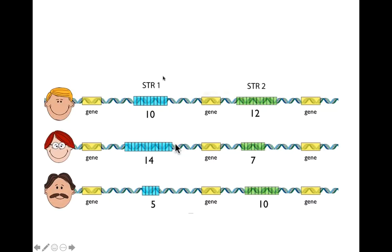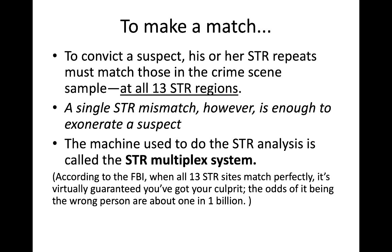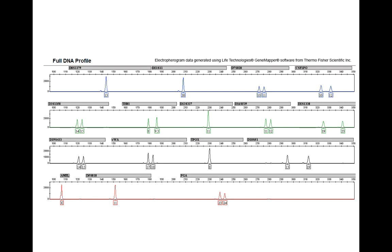Let me show you an example. We've got three different people here. We're talking about the junk DNA — the area between the genes. Here's STR one, and this person might have 10 short tandem repeats, this person might have 14, and this person might have five. On STR region number two, this person might have 12, this might be seven, it might be 10. The way this looks when it comes out of the STR multiplex system is called an electropherogram. It will show you each of the regions with a spike indicating how many STRs there are.